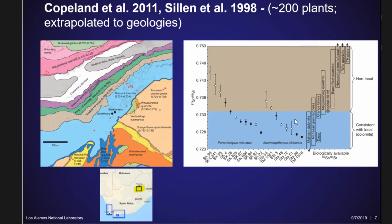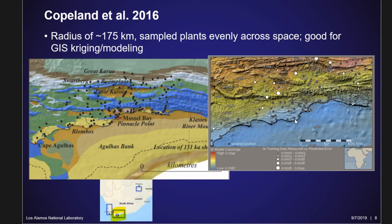We took a similar approach in our 2011 paper at the Cradle of Humankind. We looked at the geological map and collected plants from each of the different geological zones, making sure we got at least a few plants from each zone. We then used the range of values from those plants to define the potential range for each geological unit — like the dolomite — and that's how we interpreted local versus non-local fossil hominins from those caves. I wouldn't take that approach now, because it's probably not wise to extrapolate so much from just a few samples.